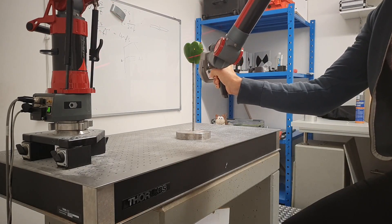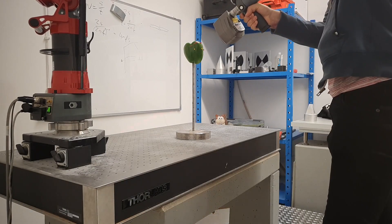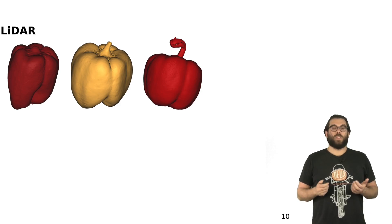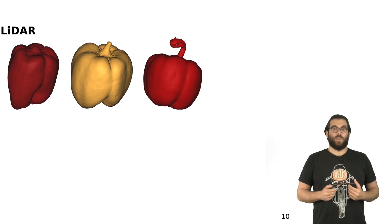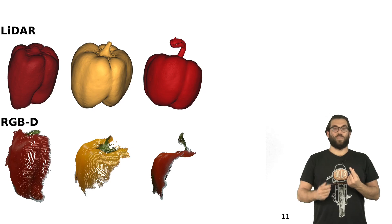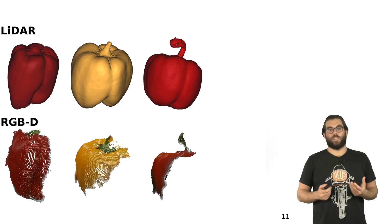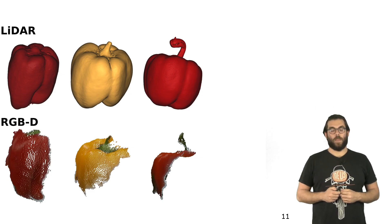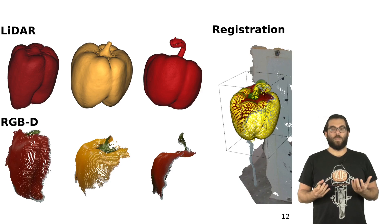So we start by scanning a large amount of sweet peppers and strawberries with a high precision laser scanner, as you can see here in this video. We obtain a dataset of complete 3D models. Then, for each fruit in our dataset, we obtain RGBD scans on the same fruits. Keep in mind that for each 3D model we have different views, because this is a situation that will happen in the field. Now we align these two data sources into the same representation.